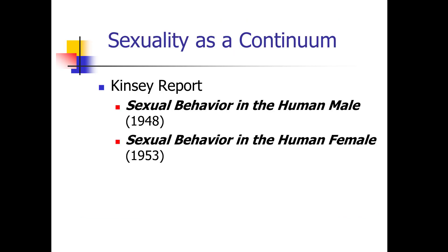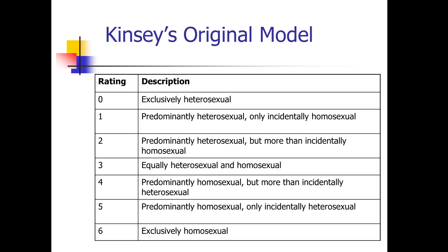Sexuality is considered a continuum, and this has been the case since the Kinsey Report of Sexual Behavior in the Human Male in 1948 and Sexual Behavior in the Human Female in 1953. Kinsey's original model had a rating scale of 0 to 6, with 0 being exclusively heterosexual, 6 being exclusively homosexual, and gradations in between.